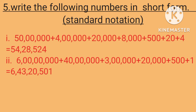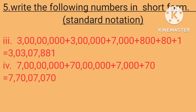Second one: six crores plus forty lakhs plus three lakhs plus twenty thousand plus five hundred plus one. Answer: six crores forty-three lakhs twenty thousand five hundred and one. Third one: three crores three lakhs plus seven thousand plus eight hundred plus eighty plus one. Answer: three crores three lakhs seven thousand eight hundred and eighty-one. Fourth one: seven crores seventy lakhs plus seven thousand plus seventy. Answer: seven crores seventy lakhs seven thousand and seventy.